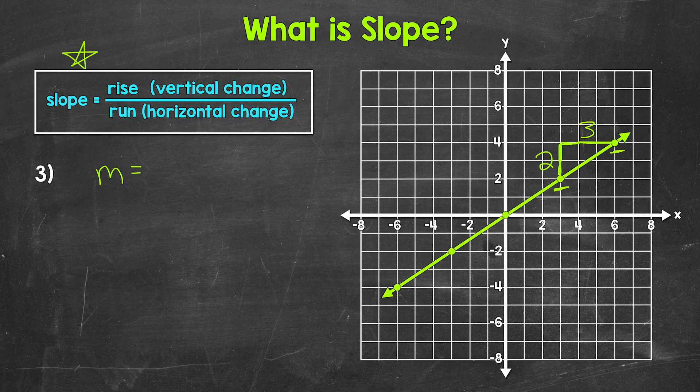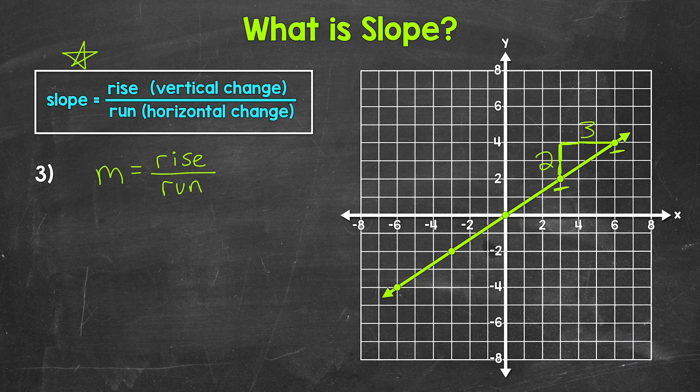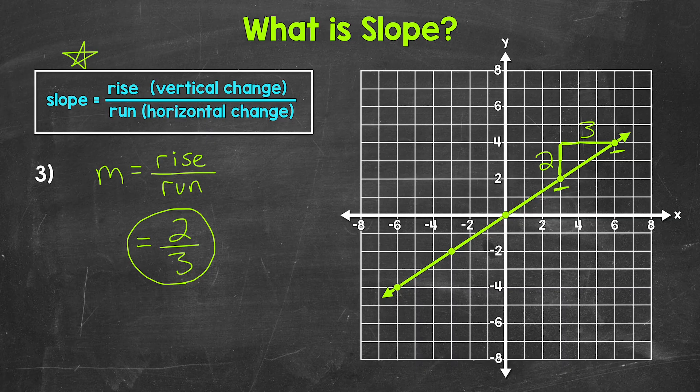So slope equals rise over run. And you'll notice I'm using m for slope. We can use m to represent slope. So slope equals rise over run. And now we can plug in our rise and run. Our rise here is two, and our run is three. So this is our slope: two over three, two thirds.